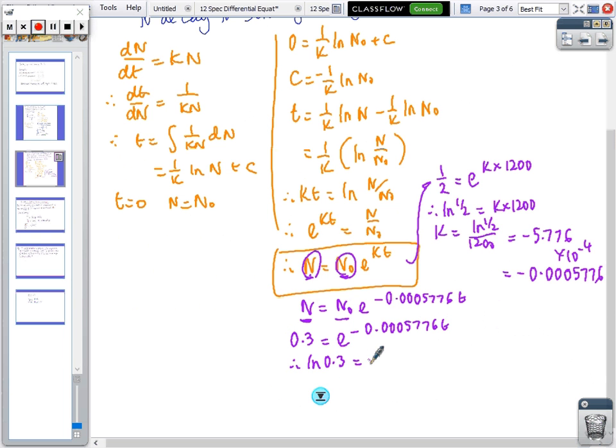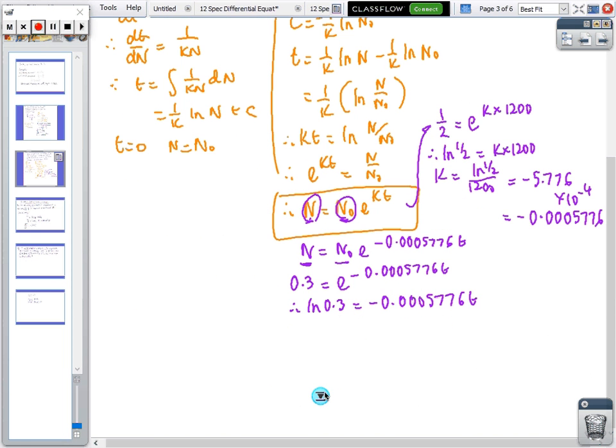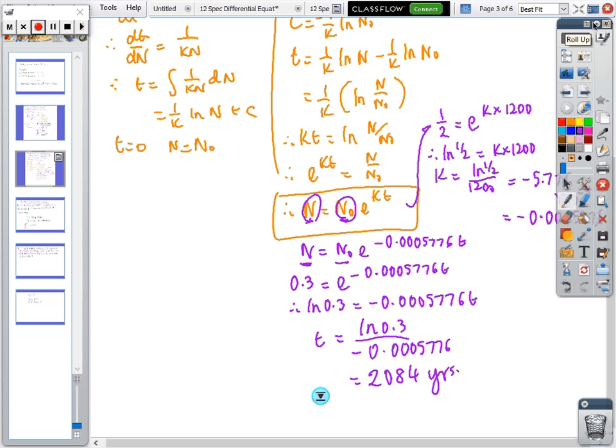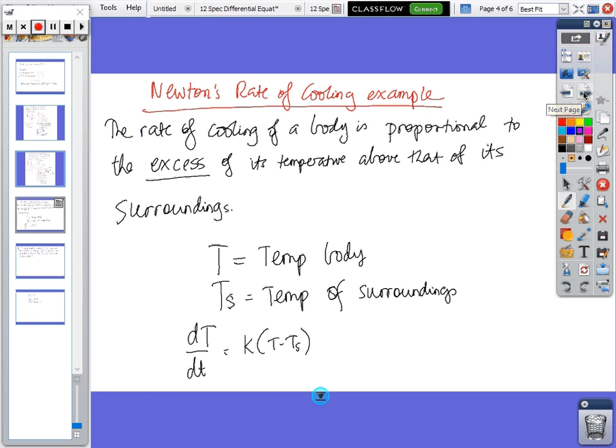So ln(0.3) equals -0.00057776t, so t equals ln(0.3) divided by -0.00057776, and according to my calculator it equals 2084 years.